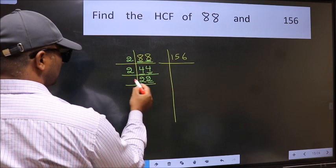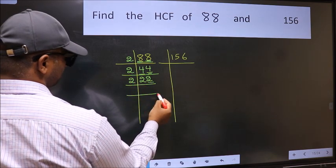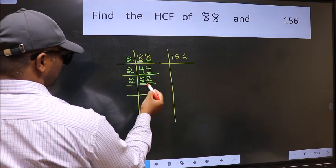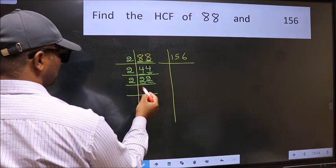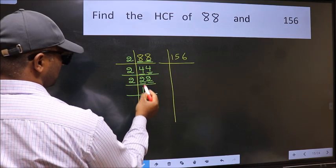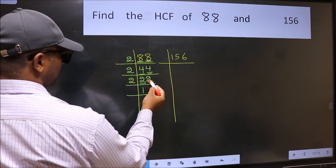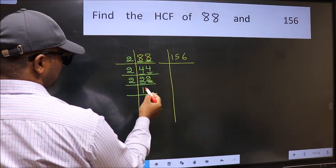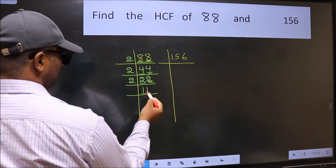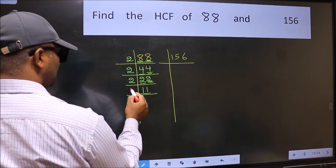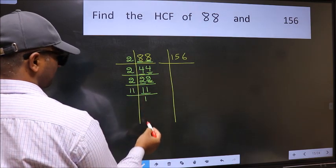Now last digit 2 — even — so take 2. First number 2: when do we get 2 in the 2 table? 2 once is 2. The other number 2: 2 once is 2. Now 11 is a prime number, so 11 once is 11.